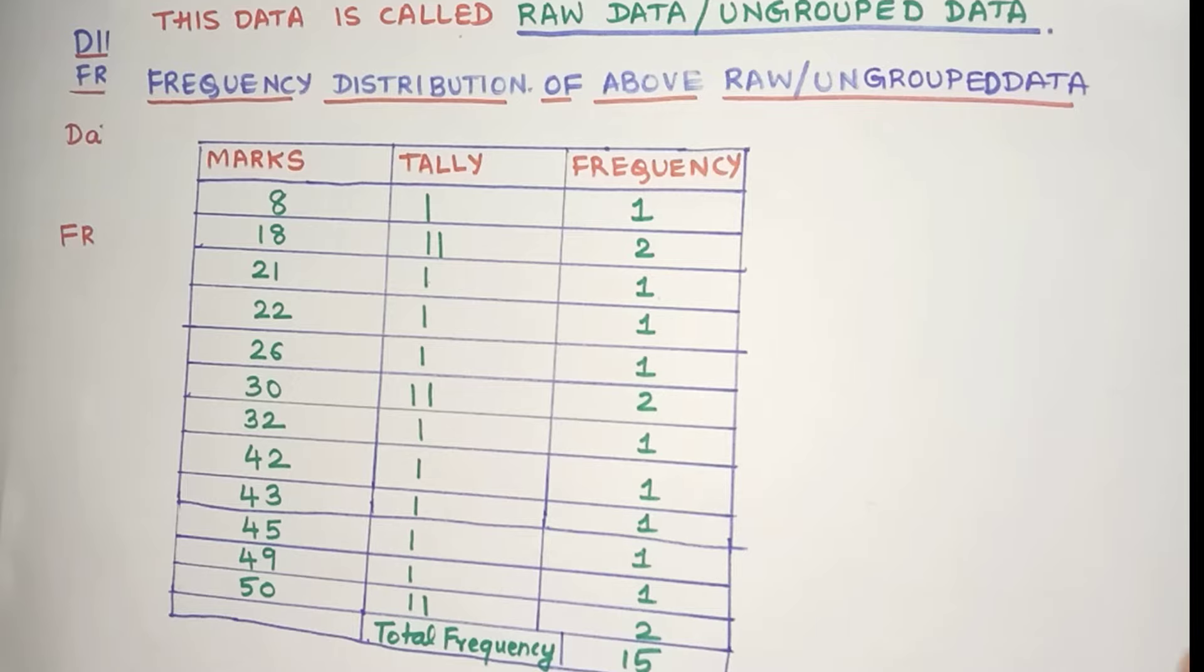Now this type of data is very suitable if we have small amount of data. But in real life, we have to deal with large amounts of data. Maybe we have to analyze the math marks of thousands of students. Imagine creating frequency distribution of each of those marks. It's not only very tedious, but not much analysis can be done from the data. That's why the idea of bundling data into groups came into picture.